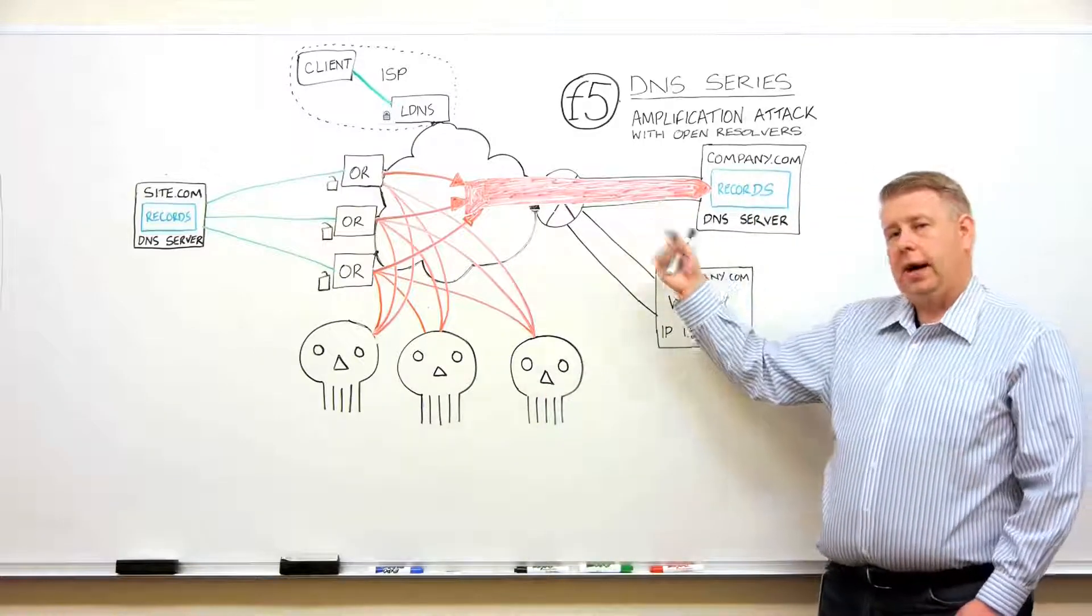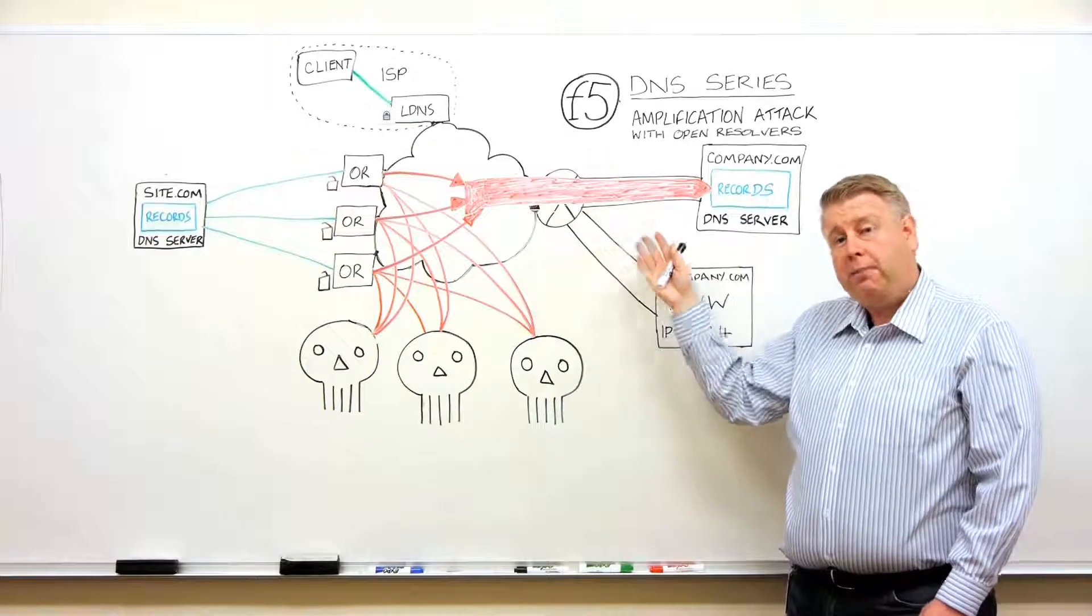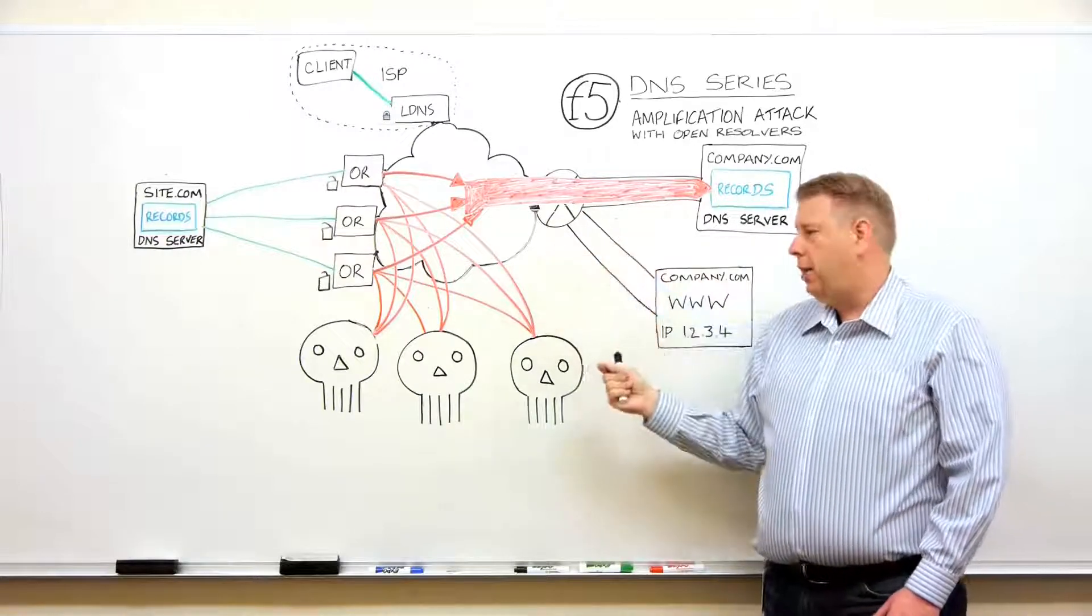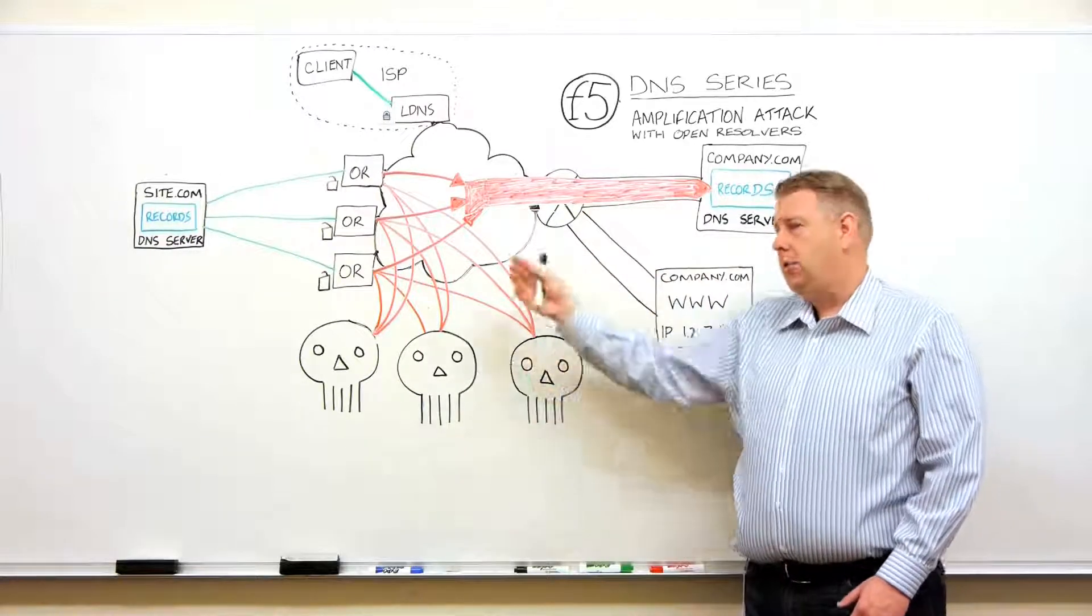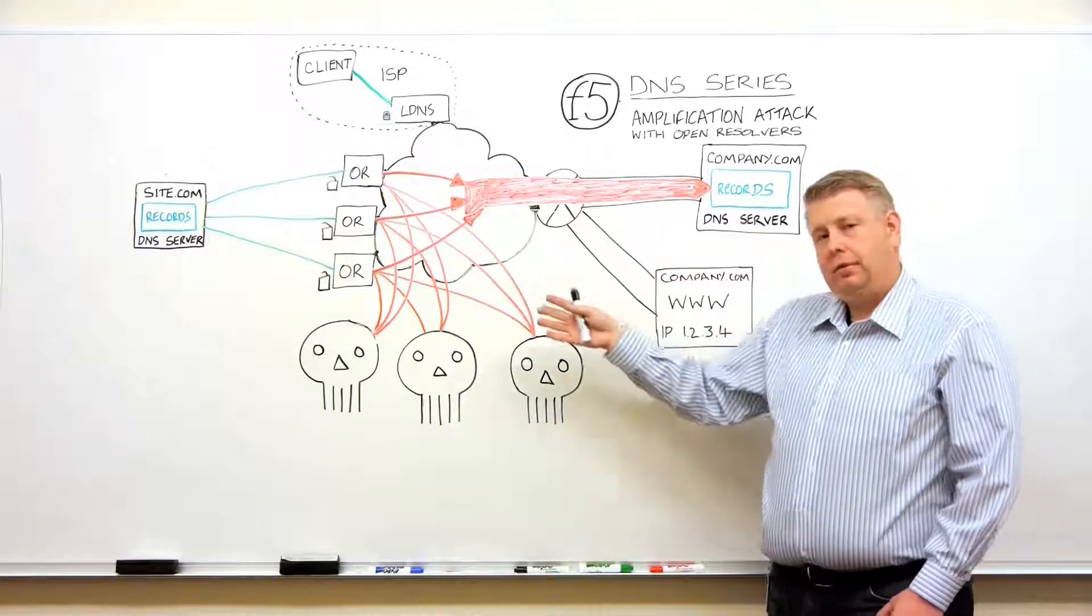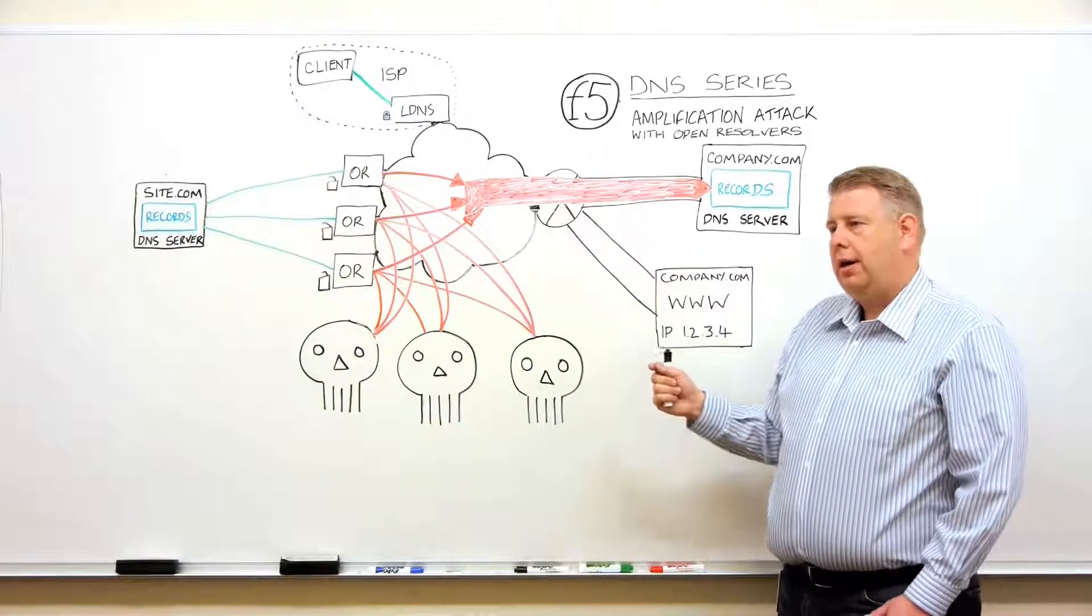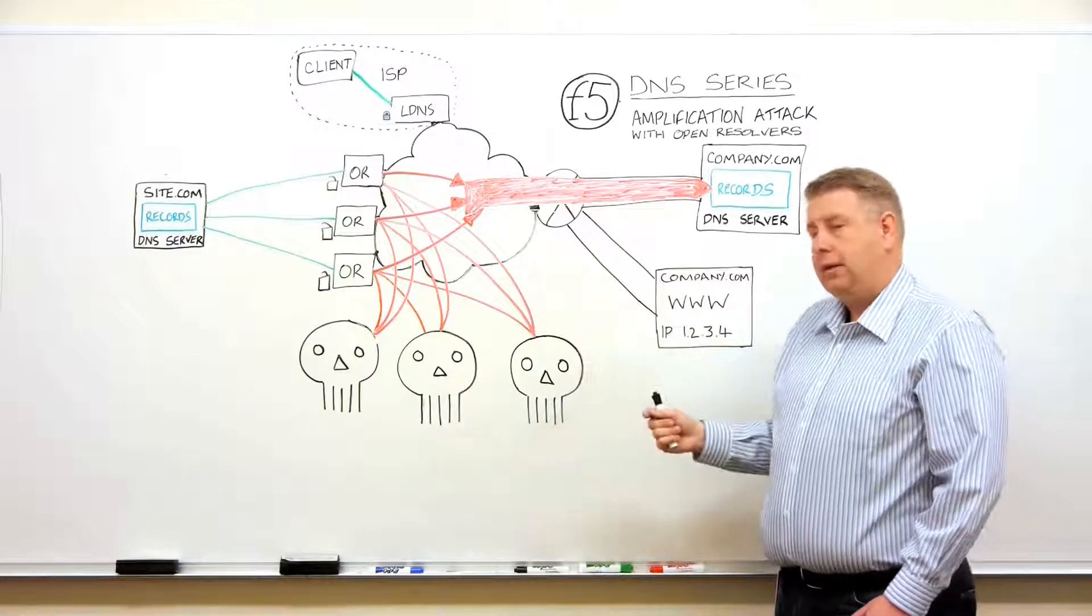As you defend against an attack, you buy bigger and bigger servers, bigger and bigger bandwidth pipes. So now the attacker has to spend more and more money to attack your site, to generate more and more traffic. Well, now if you want to be a really clever attacker, you can use another vulnerability in the DNS system.